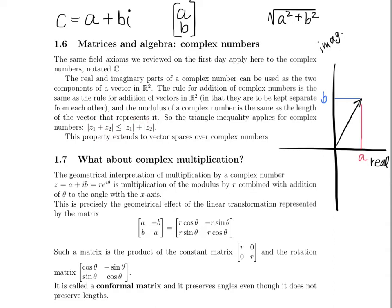Now for complex multiplication. The geometrical interpretation of multiplication by a complex number z equals a plus ib, or bi, equals r times e to the i theta, is multiplication of the modulus by r combined with addition of theta to the angle with the x axis. Let me continue labeling our diagram up here to make this a little bit clearer. Now that I've added this, this may look a little bit more familiar to you as a polar coordinate sensibility of the complex plane. r is the length of this vector and theta is the angle here.